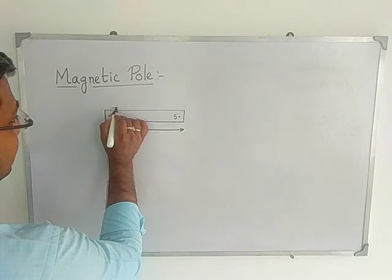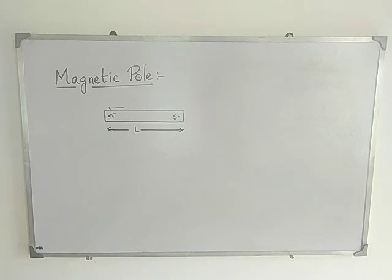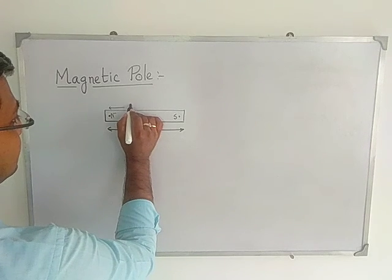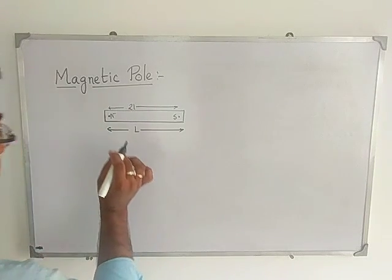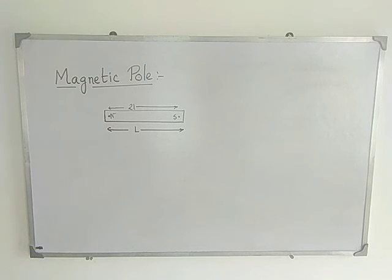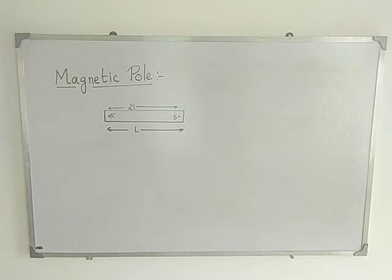The separation between the two poles has a different name — it is called the magnetic length. If the magnetic length is 12, then 12 is obviously less than the geometric length. The magnetic length is always less than the geometric length. This is the magnetic poles concept as we know from the domain theory of magnetism.